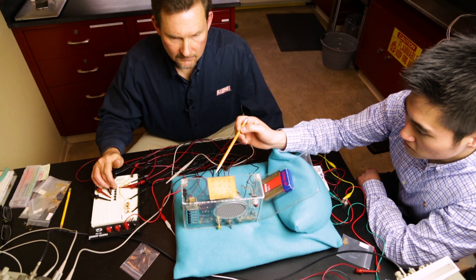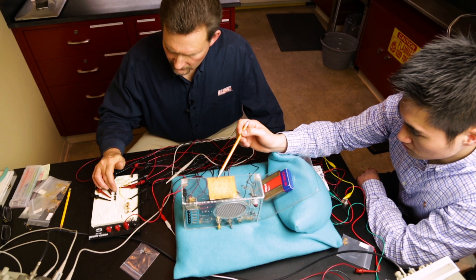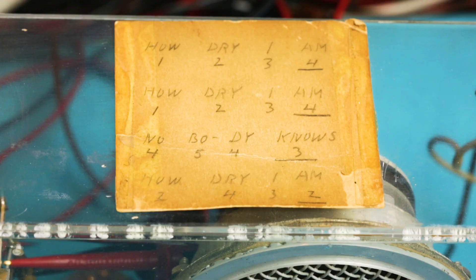So Bardeen would play the tune, How Dry I Am, when he demonstrated the box. There's actually a cheat sheet on the top of the box, so I'm going to follow that exactly.